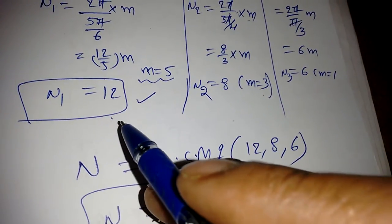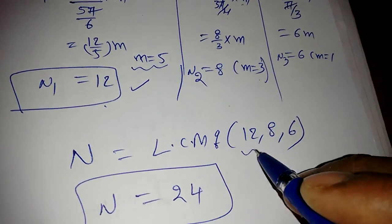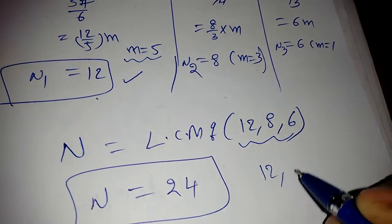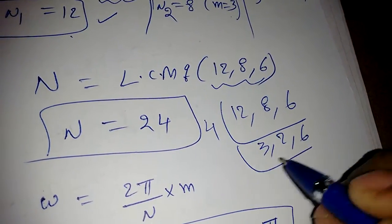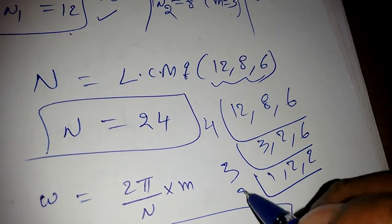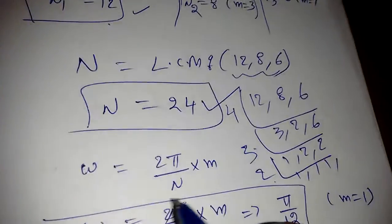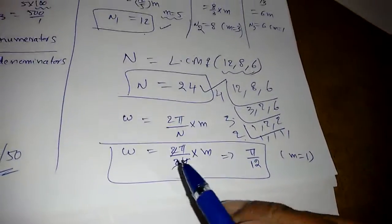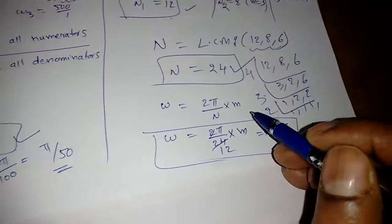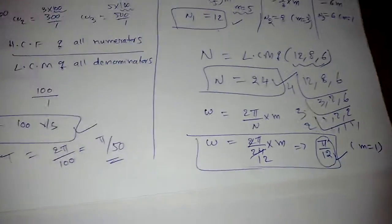When periodic signals are summed, the result is also periodic. The fundamental period N = LCM(N1, N2, N3) = LCM(12, 8, 6). Computing: LCM(8,6) = 24... working through prime factors gives LCM = 24. If the fundamental frequency in radians is needed, use ω = 2π/N, choosing the smallest integer m = 1.